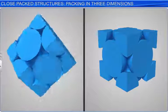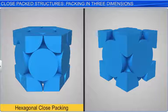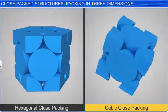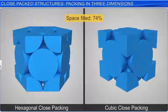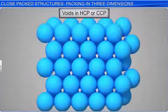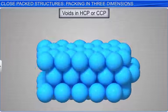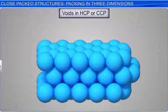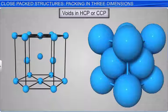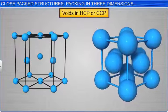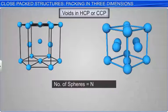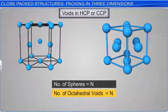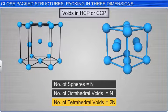Both hexagonal close packing and cubic close packing are equally efficient in terms of filling up space. In both of them, 74% of the space in the crystal is filled up. In a close packed structure, whether CCP or HCP, if there are N spheres in the packing per unit cell, then the number of octahedral voids is the same as N, while the number of tetrahedral voids is equal to 2N.